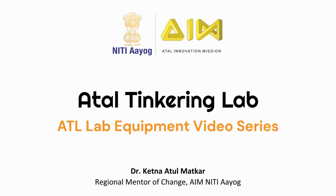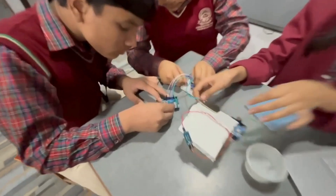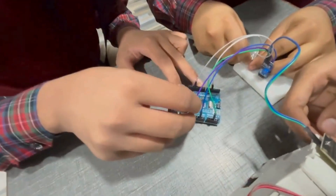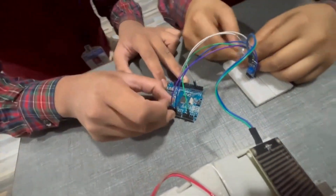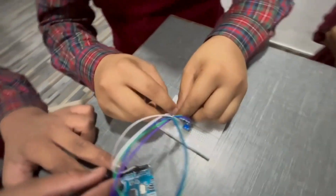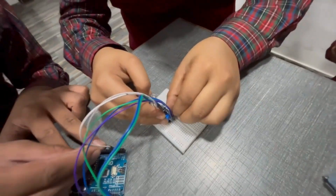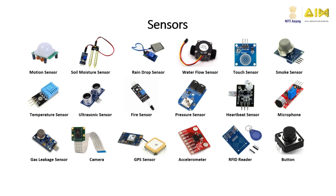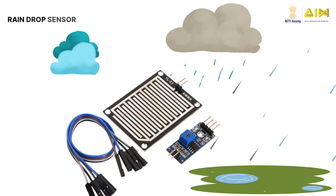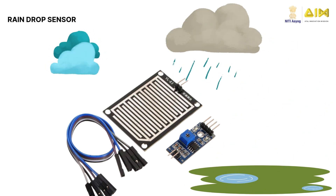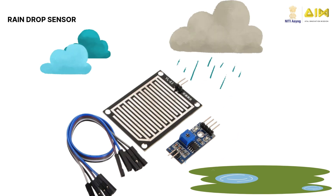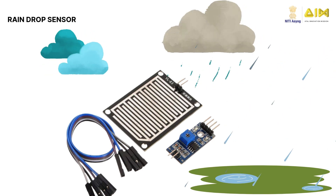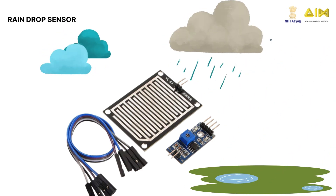Hello budding tinkerers and innovators. Welcome to yet another video in the ATL Lab Equipment Video Series. I am sure you are excited to learn about another new device that will help you tinker better and build interesting projects. We have learned about many of these sensors in the previous videos. In this video, we will look at the raindrop sensor. A raindrop sensor is a specialized electronic device designed to detect and quantify the amount of rainfall. It can help alert us or automate a system when rainy weather is detected.